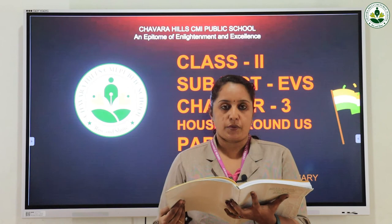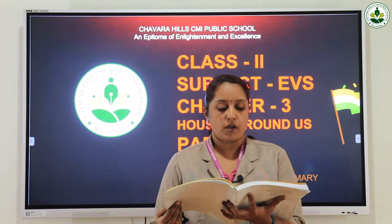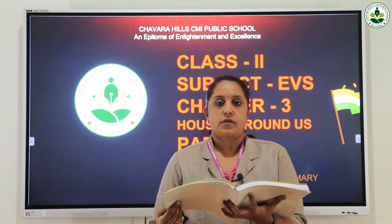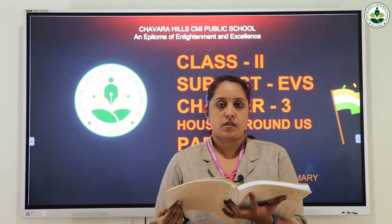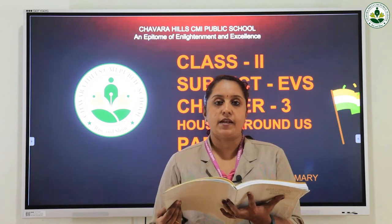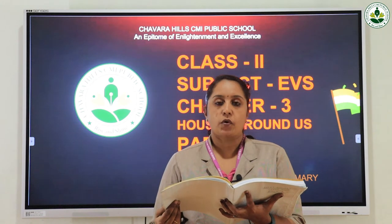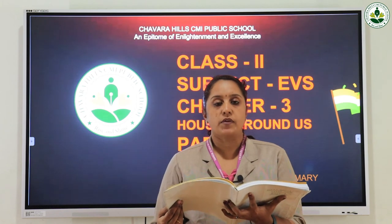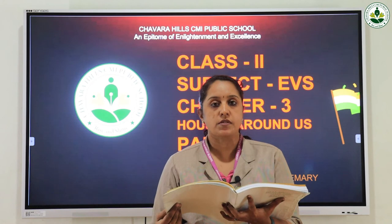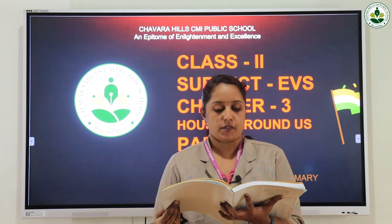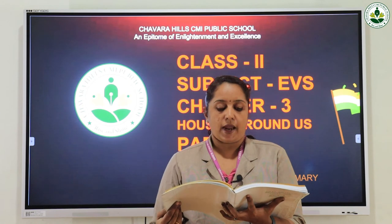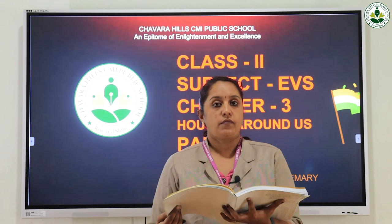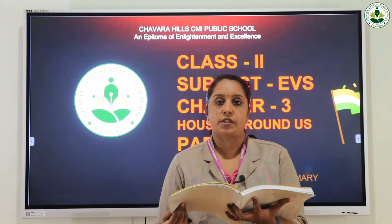When wearing a crown, you feel proud and grand. On the roof, sunlight, rain and storm cannot fall. Since the roof is on top of the house, it protects us from sunlight, rain and storm. I am there for one and all. People make me in different shapes. The names of the roofs are sloping roof, flat roof, and dome shaped roof.